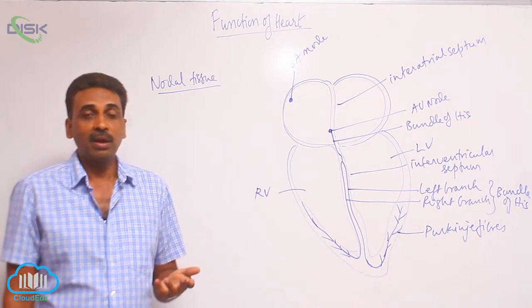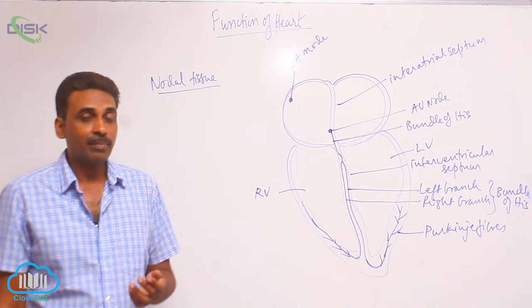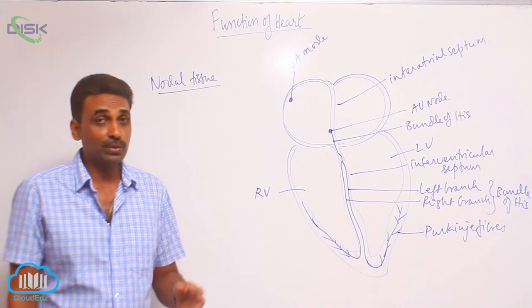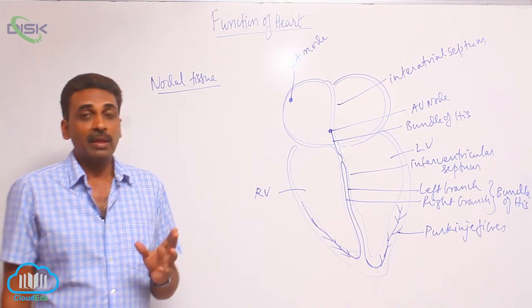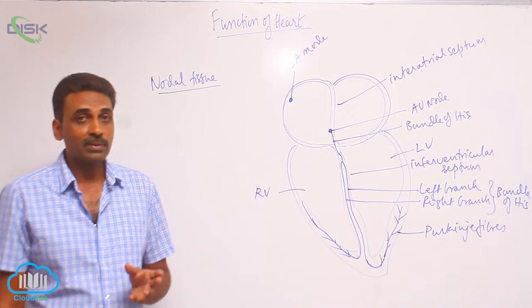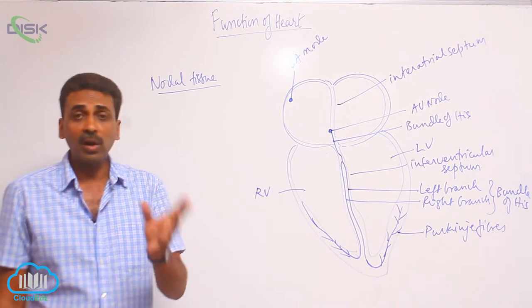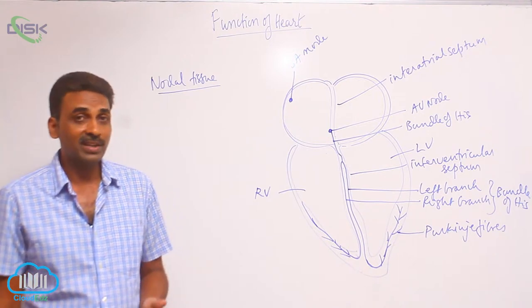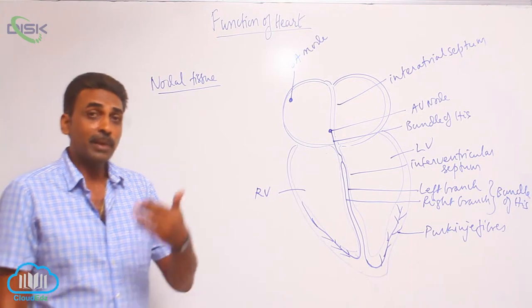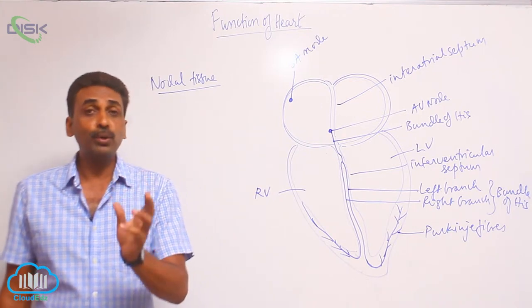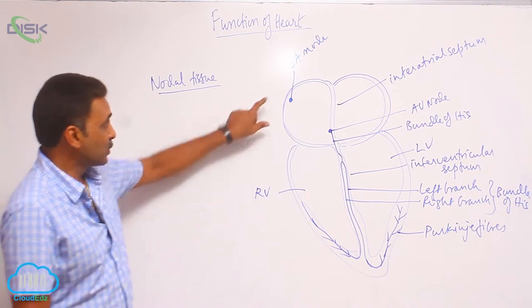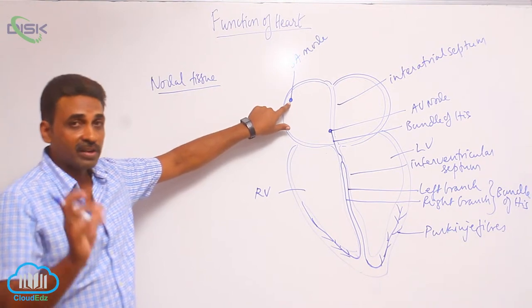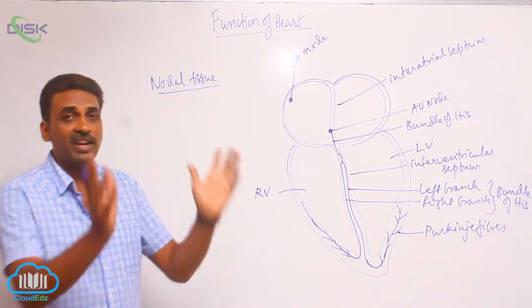In the case of higher invertebrates, when hearts are present, they are supposed to be neurogenic. Neurogenic means the pacemaker is formed by a group of neurons. But all chordate hearts are supposed to be myogenic. Myogenic means the pacemaker is formed by a group of cardiac muscles. So here, the principal pacemaker is the SA node, and it is formed by a group of cardiac muscles and will generate nerve impulses.